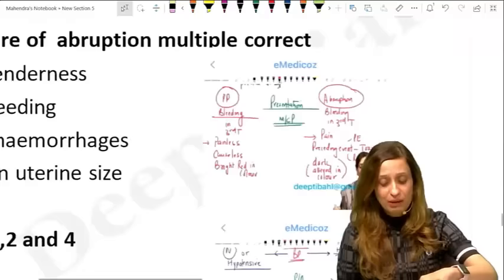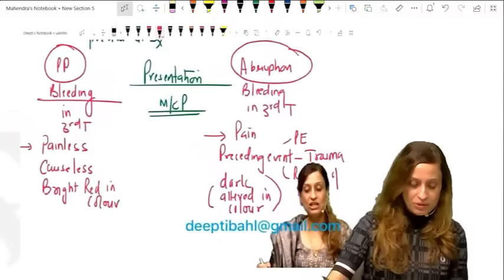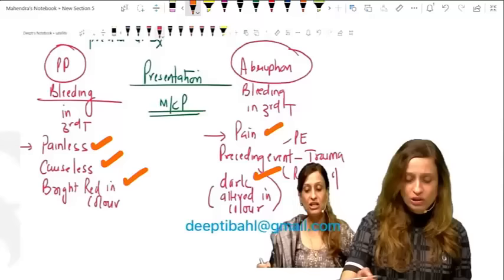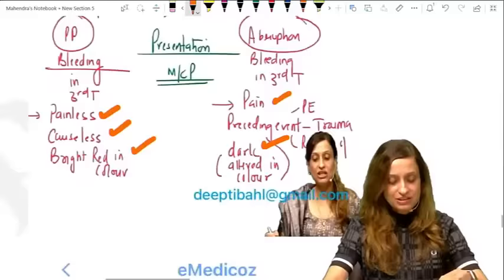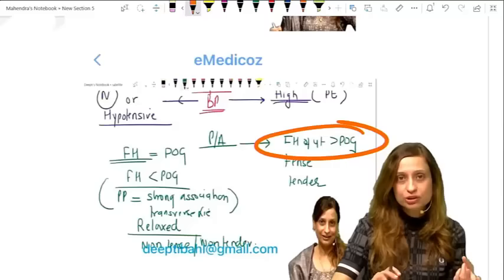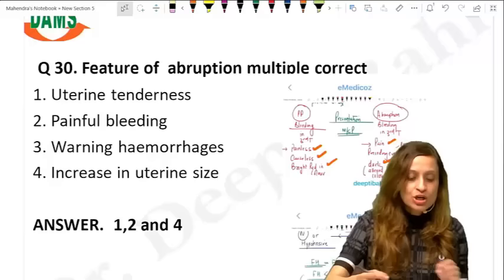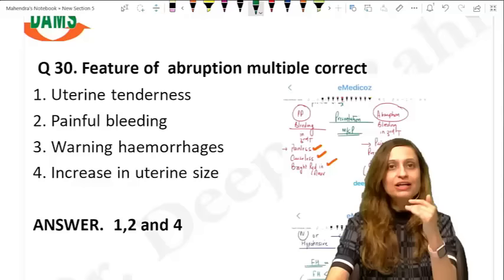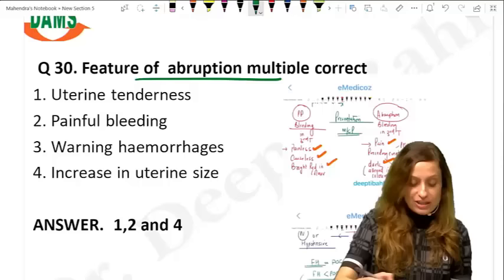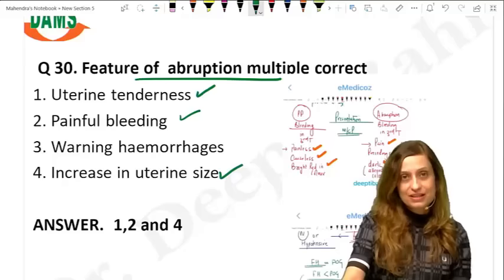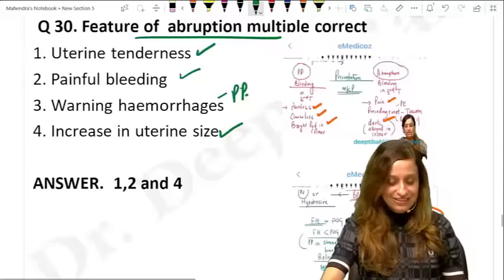A multiple correct question comparing placenta previa and abruption clinical features. Features of abruption: painful bleeding, altered color, usually preceded event, fundal height more than POG, and uterine tenderness. Warning hemorrhages — painless, causeless, bright red — are features of placenta previa. Uterine tenderness, painful bleeding, and fundal height more than POG are correct features of abruption.